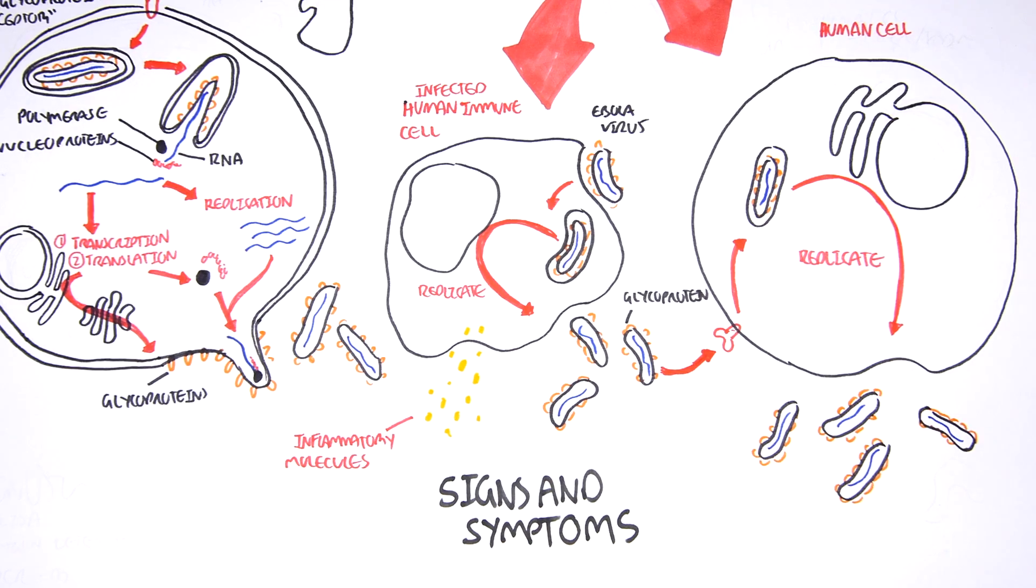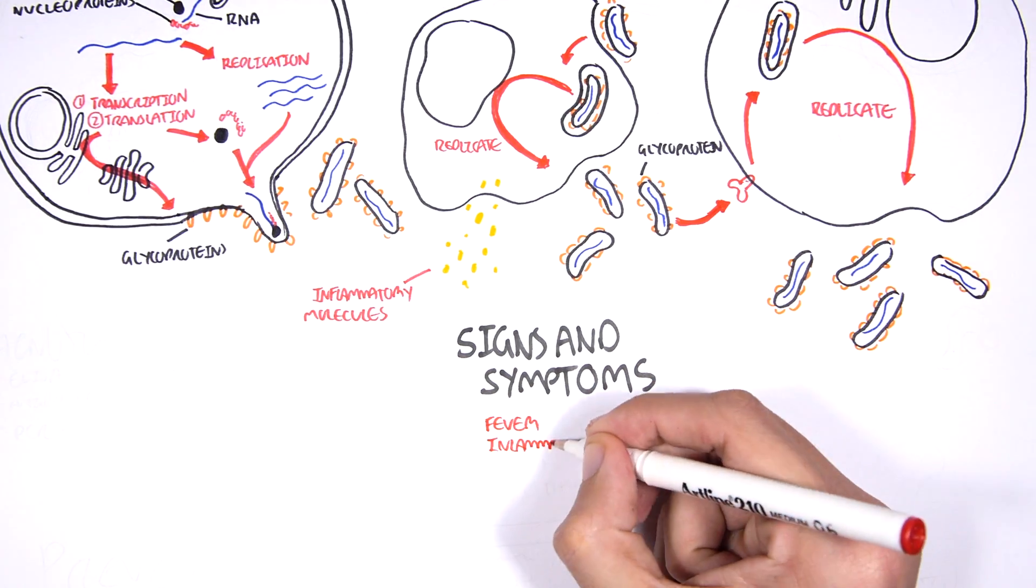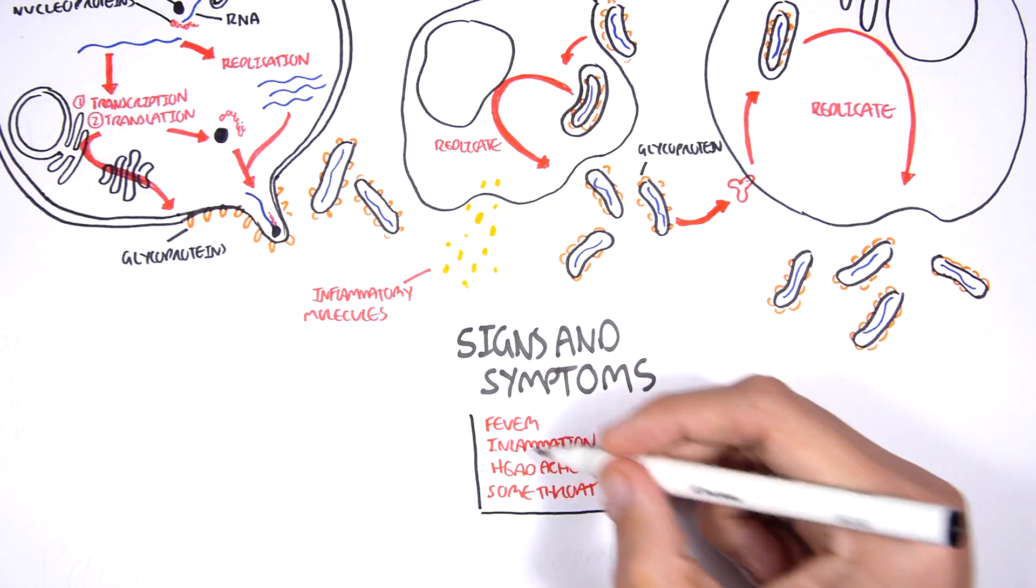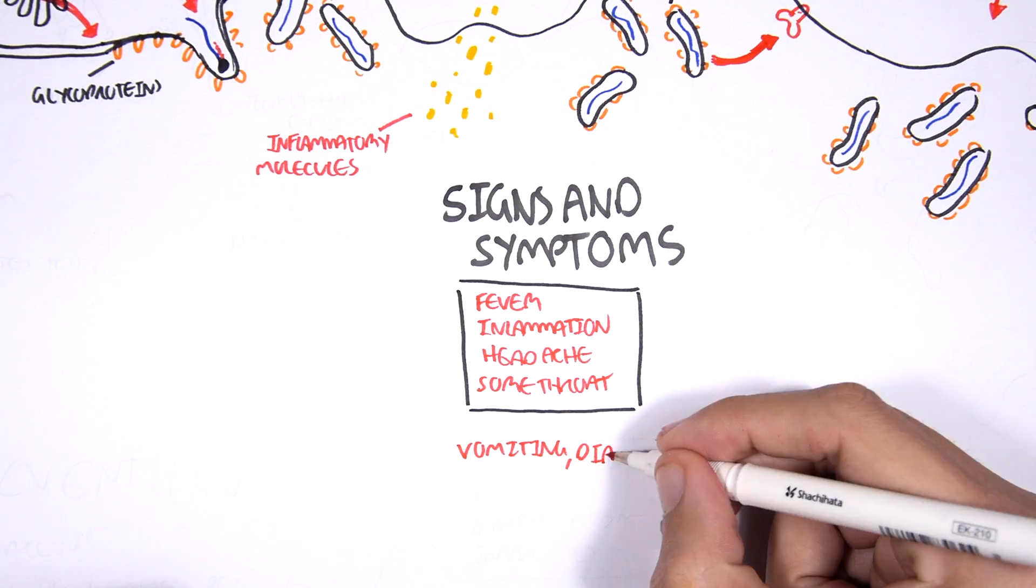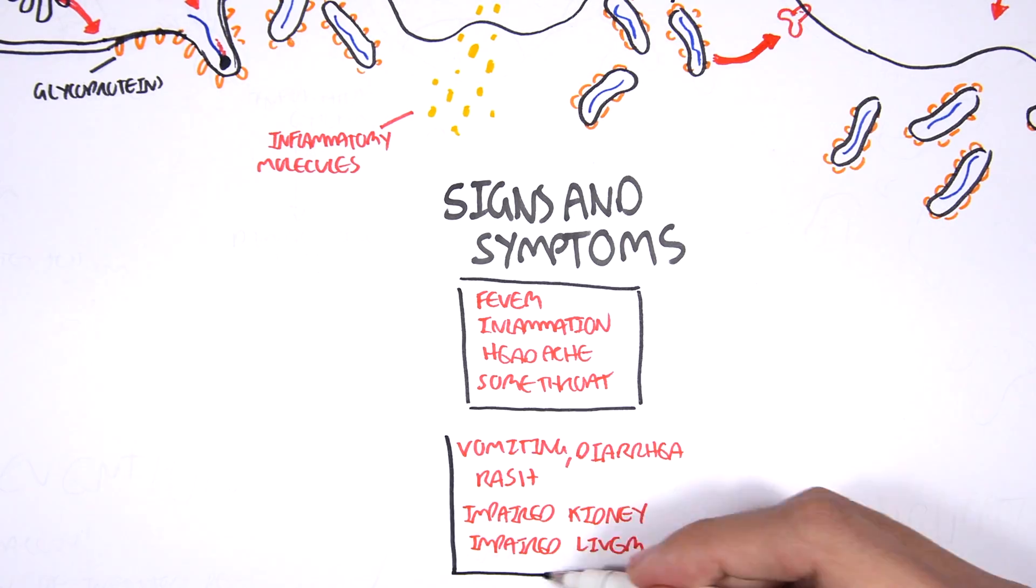The signs and symptoms of Ebola virus disease include fever, inflammation, headache, and sore throat. Other progressive signs and symptoms include vomiting, diarrhea, rash, impaired kidney, and impaired liver function.